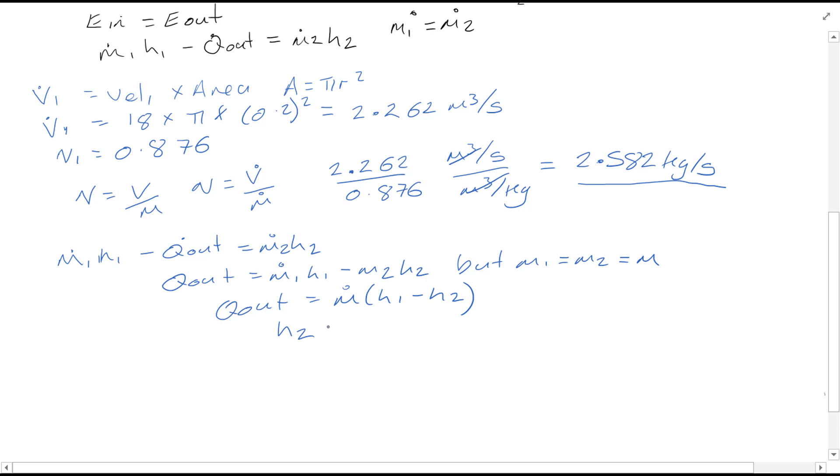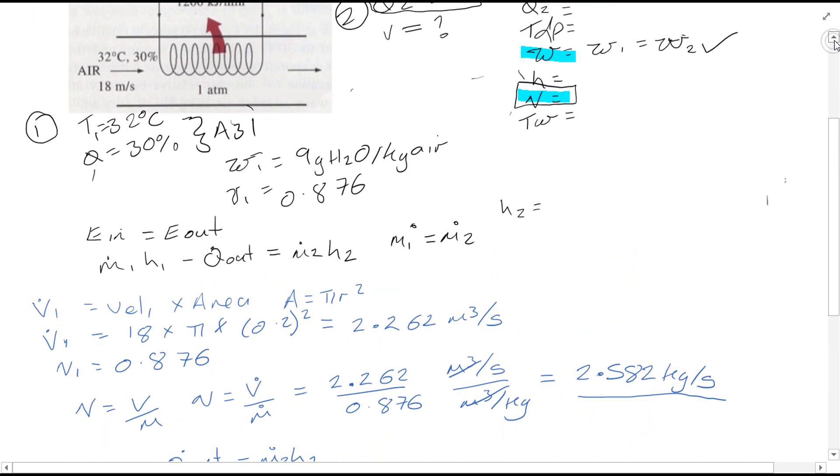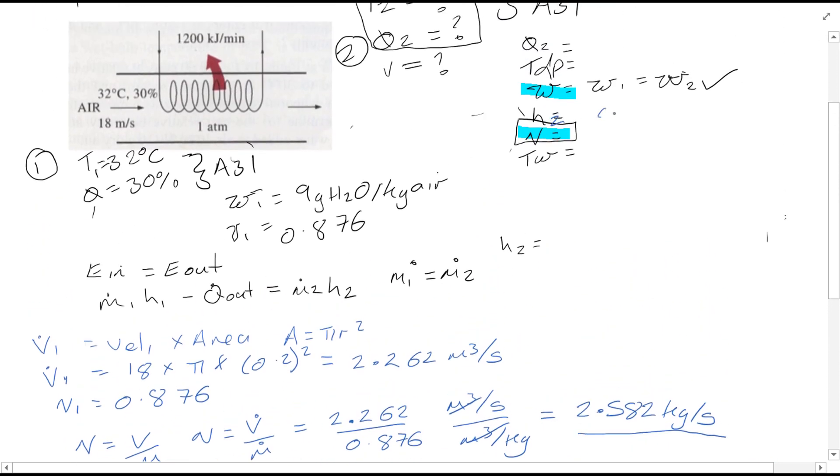To rearrange to find H2, you'll see that H2 is equal to H1 minus Q out over M, which equals 56 minus 1200 divided by 60, all over 2.582. H2 is then equal to 48.25 kJ per kg. You can see H2 there, 48.25 kJ per kg.